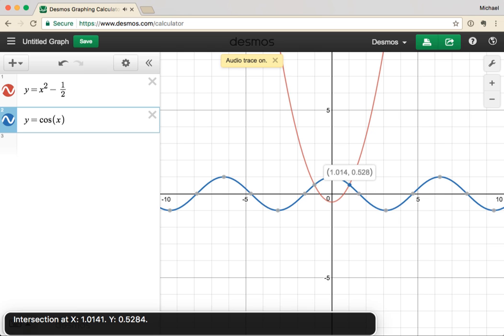Intersection at x 1.0141, y 0.5284. Zero at x pi over 2, y 0. Extremum at x pi, y minus 1.